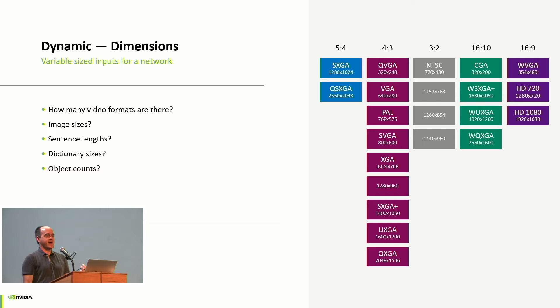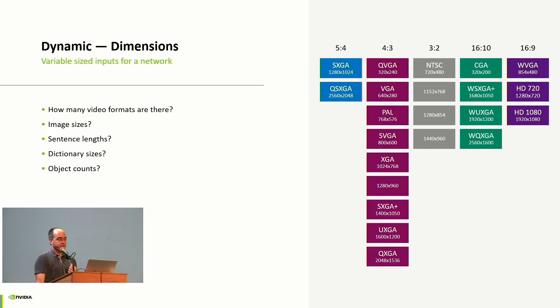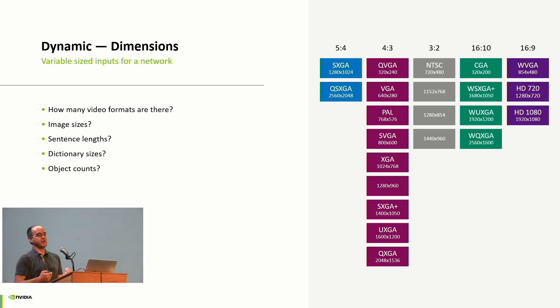In the previous example we had static input sizes, but in reality most things are not static. There are many different video formats — QVGA through 1080p HD — and a neural network needs to handle all of them. In TensorRT we call these dynamic dimensions, where you specify that a dimension is dynamic and let the runtime figure it out. Optimizing for dynamic dimensions is very important for high-performance neural networks.